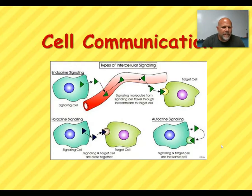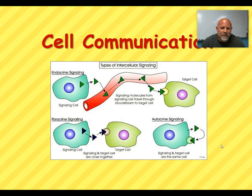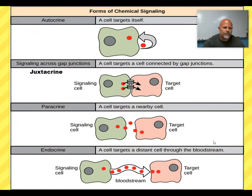Today's presentation is going to be on cell communication. Cells can communicate with each other in lots of different ways. Sometimes they release hormones that send a message to themselves, to an adjacent cell, to a nearby cell, or to a cell that's far away. We have a different name for each one of these.